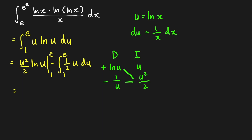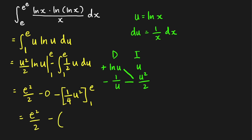Evaluating: at u equals e, we get e²/2 times ln(e) equals e²/2; at u equals 1, ln(1) equals 0. The remaining integral gives (1/2)·(u²/2) evaluated from 1 to e, which is e²/4 minus 1/4. So the final answer is e²/2 minus (e²/4 minus 1/4), which equals e²/4 plus 1/4.